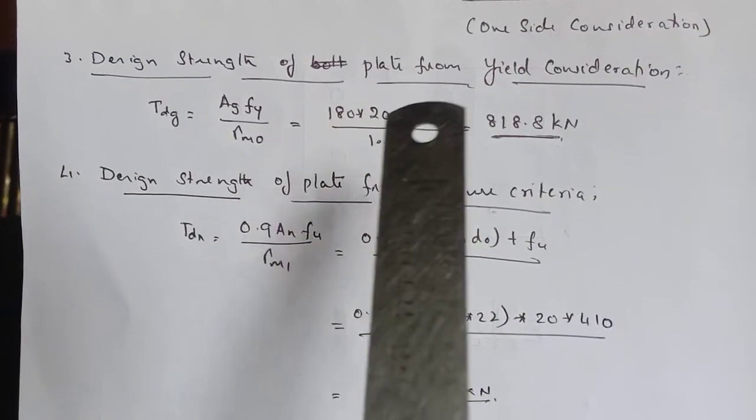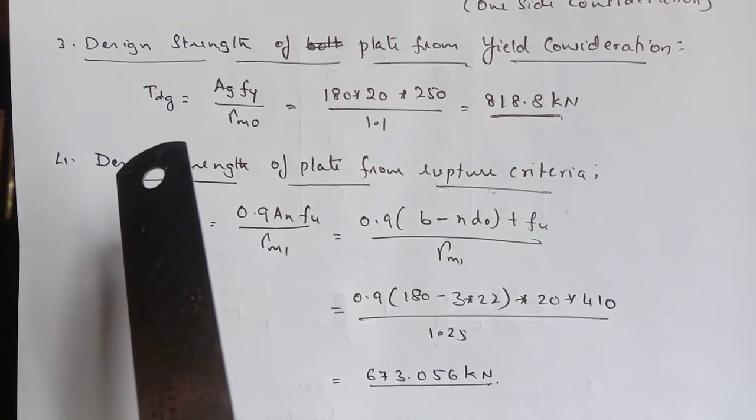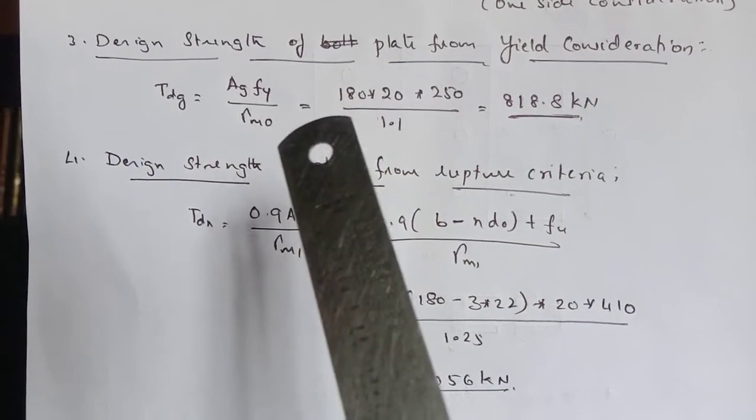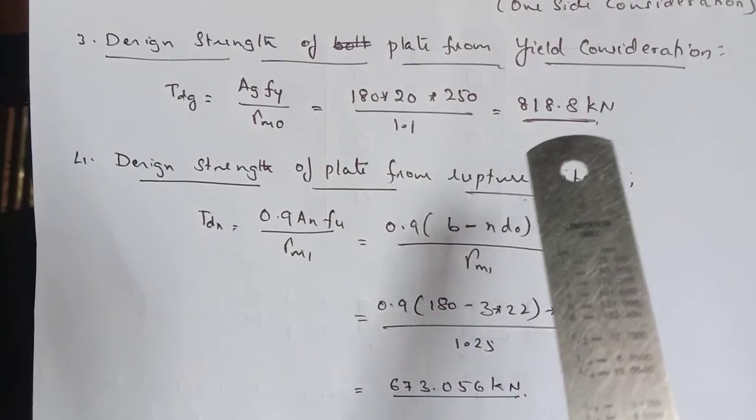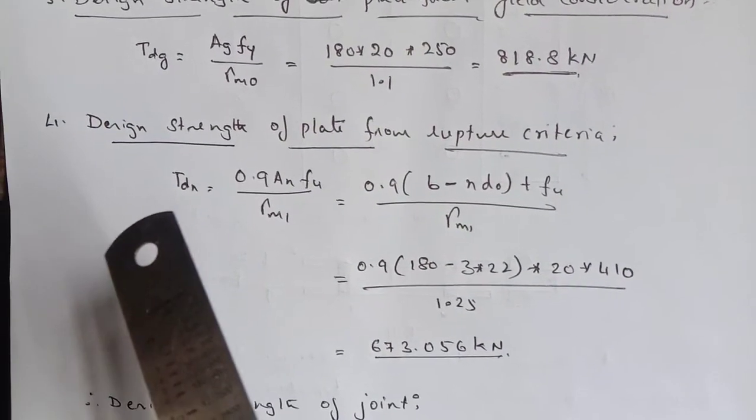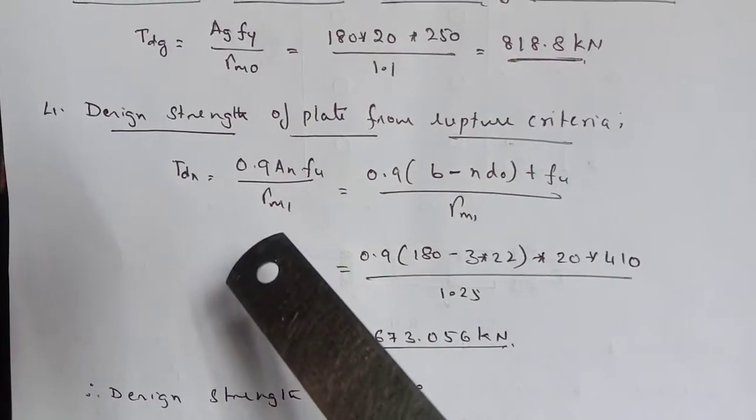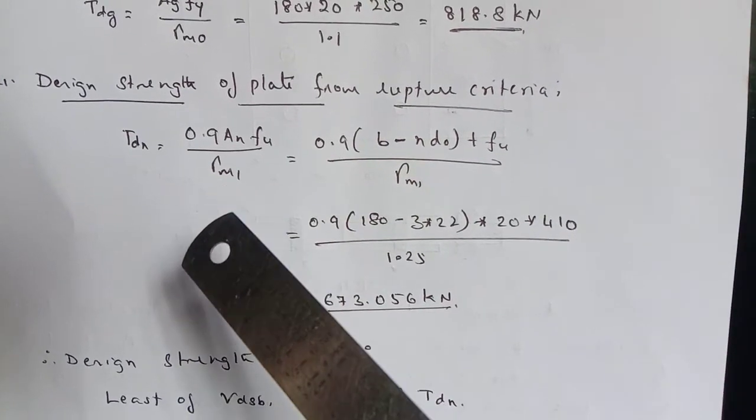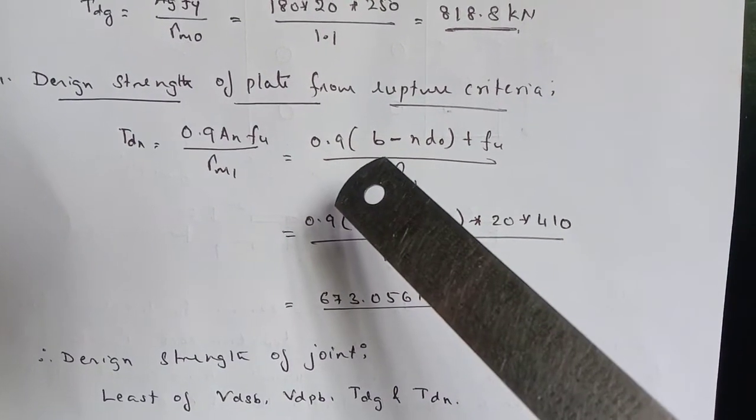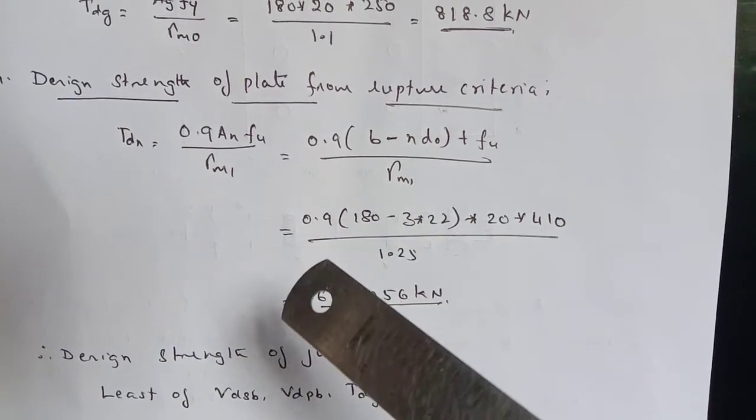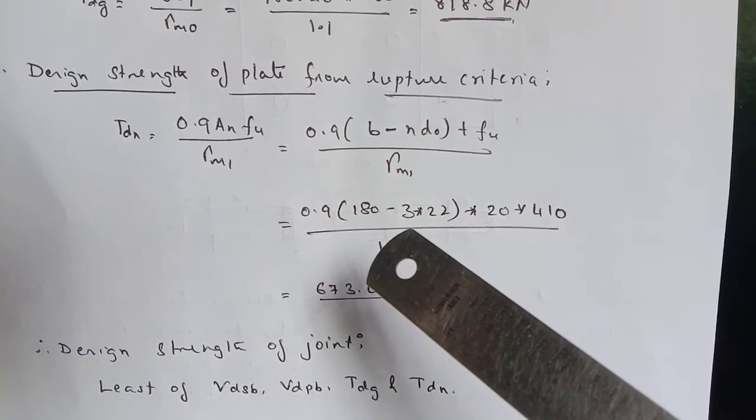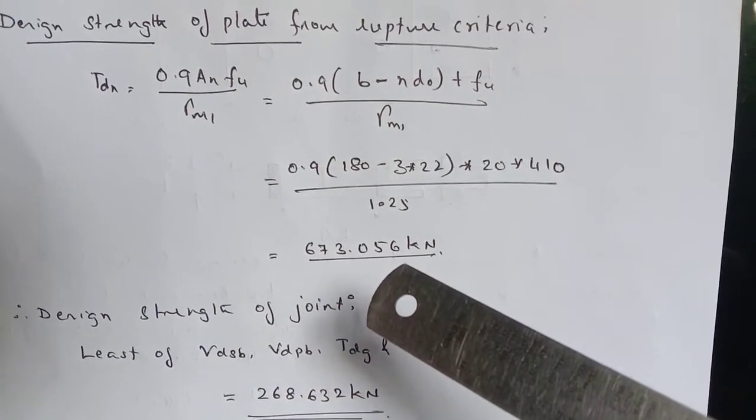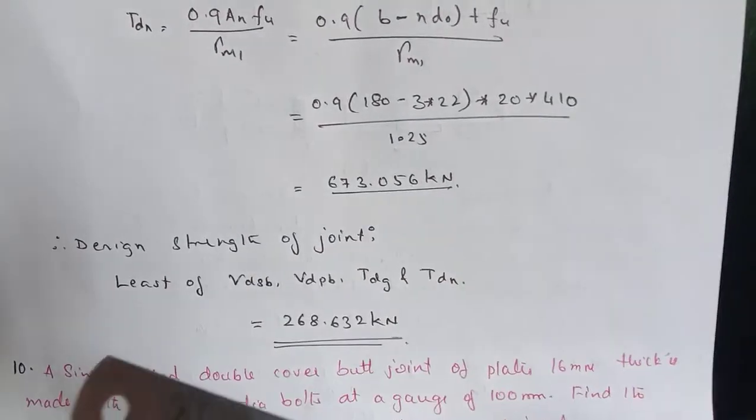Now design strength of the plate due to yielding consideration, we can have the formula from the code book. TDG equal to AGFY divided by gamma M0 works out to be 818.8 kilonewton. Then design strength of the plate from rupture criteria TDN, which is nothing but the tension capacity of the plate 0.9 ANFU divided by gamma M1. We have AN equal to B minus ND0. So upon substitution, we get 0.9, 180 minus 3 into 22, 2410 by 1.25, 673.056 is the answer in terms of kilonewton.